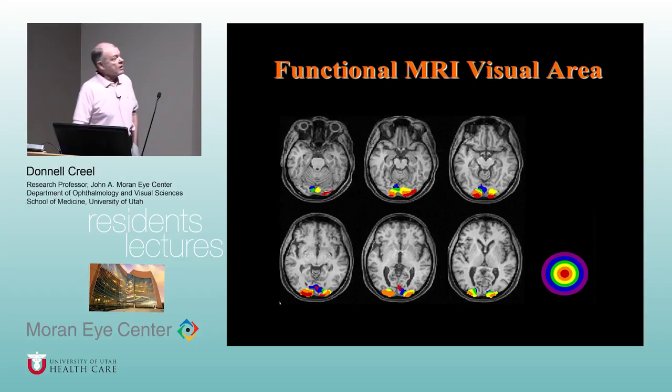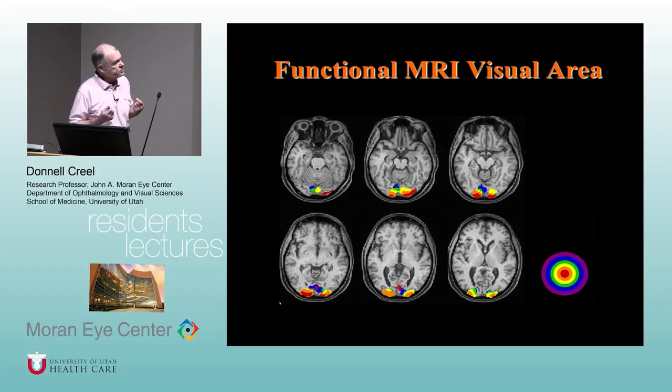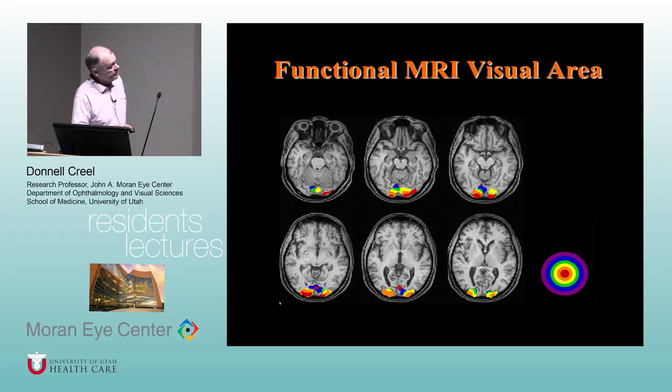This is a functional MRI of the visual area stimulated with a check pattern similar to what is commonly used in visually evoked potentials. I want to show this to demonstrate the variation between hemispheres. This was recorded at an MRI unit at the university. Note the asymmetry — the hottest area is red. In this case, the hottest area is buried deep down three or four centimeters.